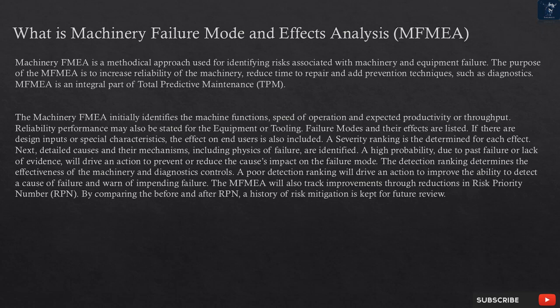Failure modes and their effects are listed. If there are design inputs or special characteristics, the effect on end users is also included. A severity ranking is then determined for each effect. Next, detailed causes and their mechanisms, including physics of failure, are identified. A high probability, due to past failure or lack of evidence, will drive an action to prevent or reduce the cause's impact on the failure mode.